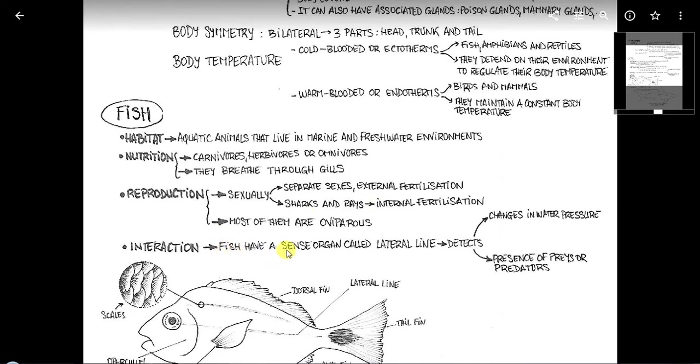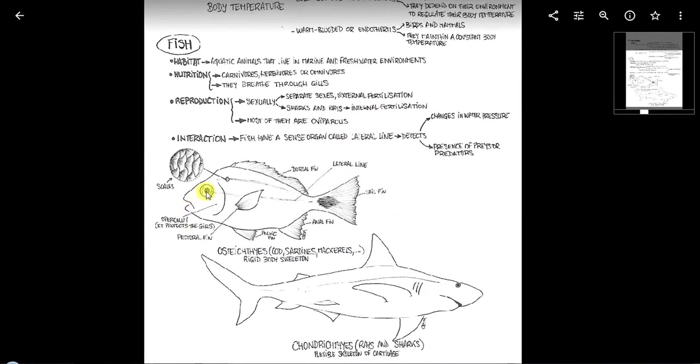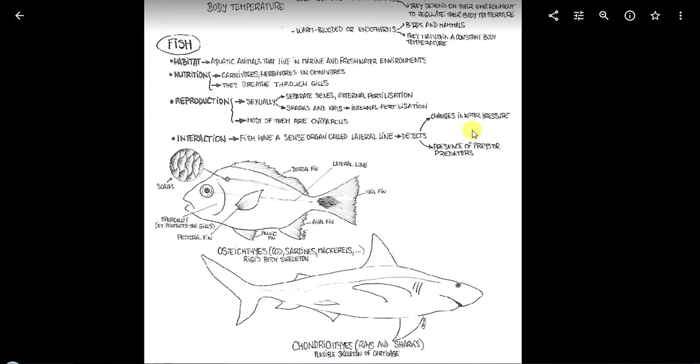Los peces tienen un órgano llamado línea lateral, que es esta de aquí. ¿Vale? Que lo que hace es detectar, es un órgano nuevo para nosotros porque nosotros no tenemos ese tipo de órgano, pero detecta cambios de presión en el agua y presencia o ausencia de predadores. Hay tiburones que tienen ampollas de Lorencini en el morro, que detectan la electricidad de sus presas. Ellos ven como destello producido por las pequeñas descargas eléctricas de las contracciones musculares de sus presas y así es como ellos detectan que ahí hay algo para comer.